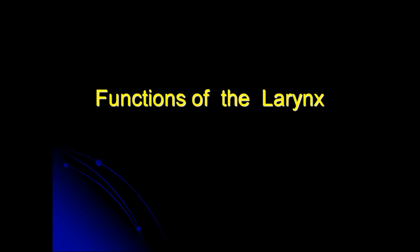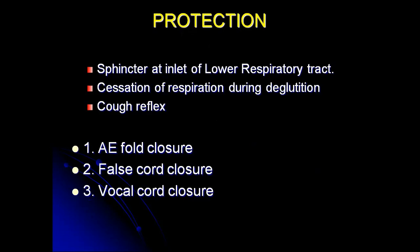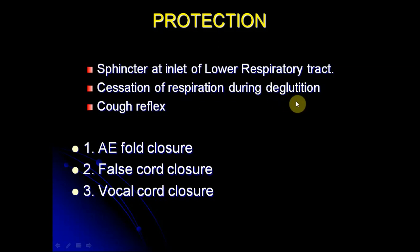Even though the larynx is called the voice box, voice is not its main function — respiration is the main function. It helps in respiration by protecting the airway and providing a passage for respiration. It also provides thoracic fixation in manual work and certain actions, and phonation is an accessory function. The larynx protects the lower airway through its sphincter action: it acts as a sphincter at the inlet of the lower respiratory tract, provided by epiglottic fold closure, false vocal cord closure, and true vocal cord closure — of which the true vocal cord closure is the strongest. There is also cessation of respiration during deglutition.